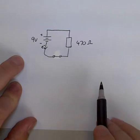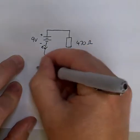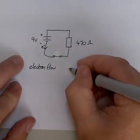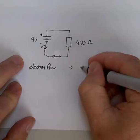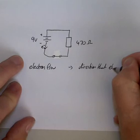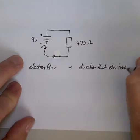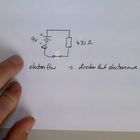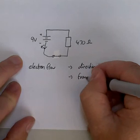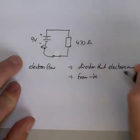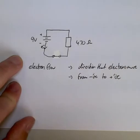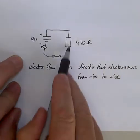This is what we call electron flow. Electron flow is the direction that the electrons move. And it's from the negative terminal to the positive terminal. So the electron flow is this direction, anti-clockwise in the circuit.